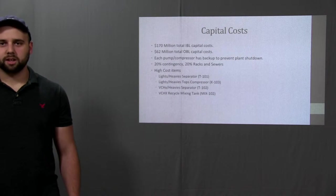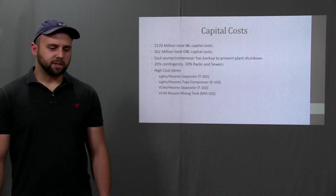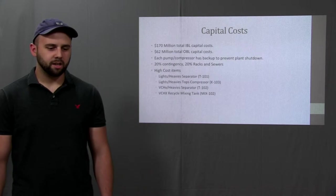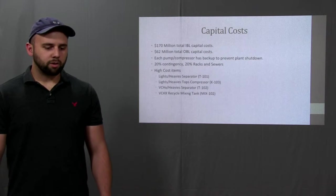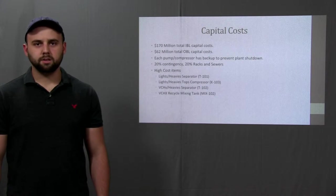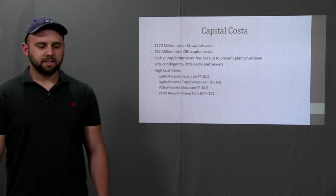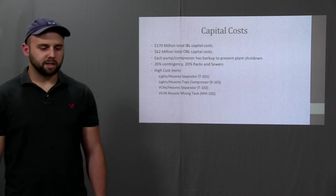Factored into the capital cost is a backup unit for every pump and compressor and these have the exact same specifications as their counterpart. Contingency which accounts for unforeseen issues in the future such as malfunctions and breakdowns is estimated to be 20 percent of the total capital cost. Racks and sewage for drainage and disposal are estimated to be 20 percent of the total capital cost.